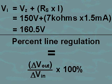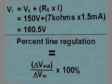Percent regulation is a figure of merit used to characterize the performance of a voltage regulator. It is the change in output voltage for a given change in input voltage. Percent line regulation is equal to the delta voltage output divided by the delta voltage input times 100%.